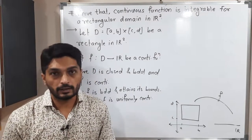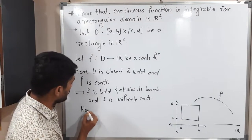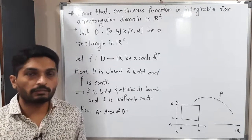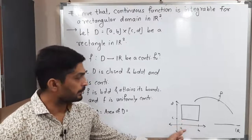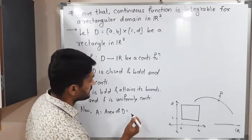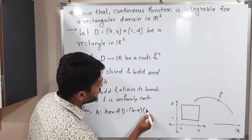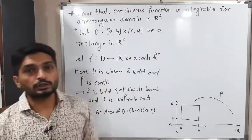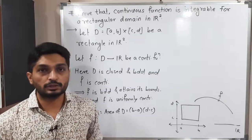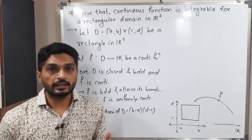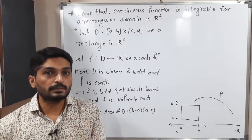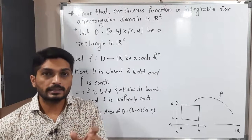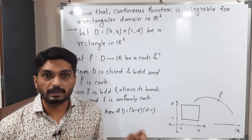We have this rectangle, so let us find its area first. We will denote it by A, where A equals the area of D. The area of the rectangle is length times width: (b−a) times (d−c), so area A equals (b−a)(d−c). Now, what we have to prove is that the function is integrable. The standard criteria is that upper sum minus lower sum, U(P,F) minus L(P,F), is less than epsilon.